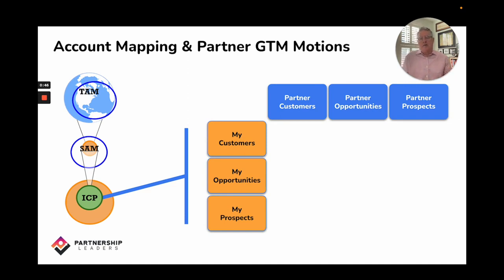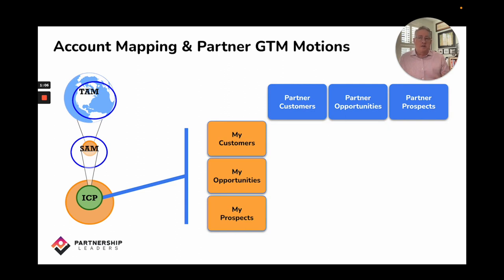The next exercise is to get with your partners and say: I have customers, opportunities, and prospects — what are yours, and where is the overlap? Historically, the challenge has been that if your VP of sales or CRO is asked to share customers, opportunities, and prospect lists with a partner, they would lose their mind. These are the most valuable assets the company has, and no CRO would take that at face value.